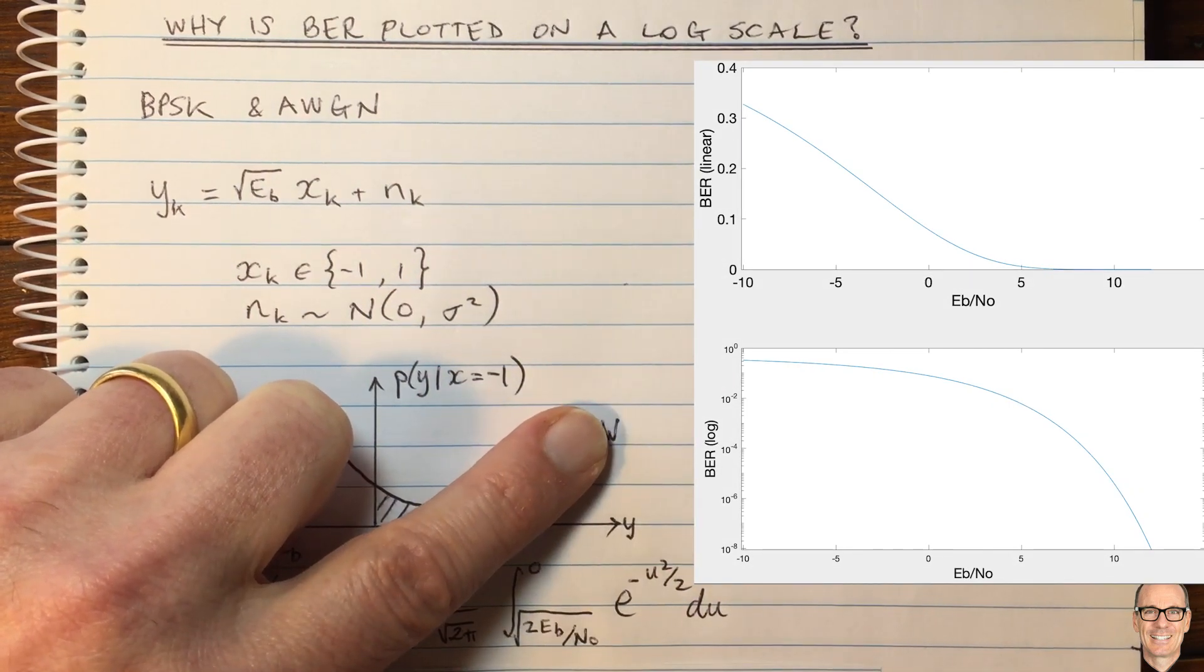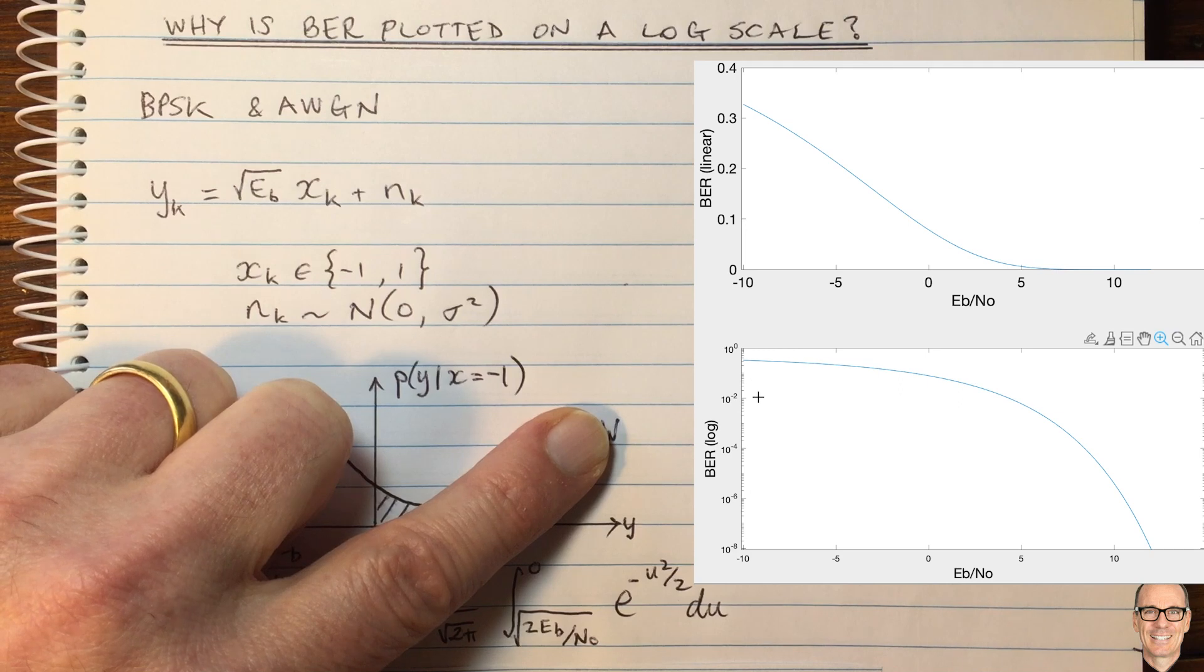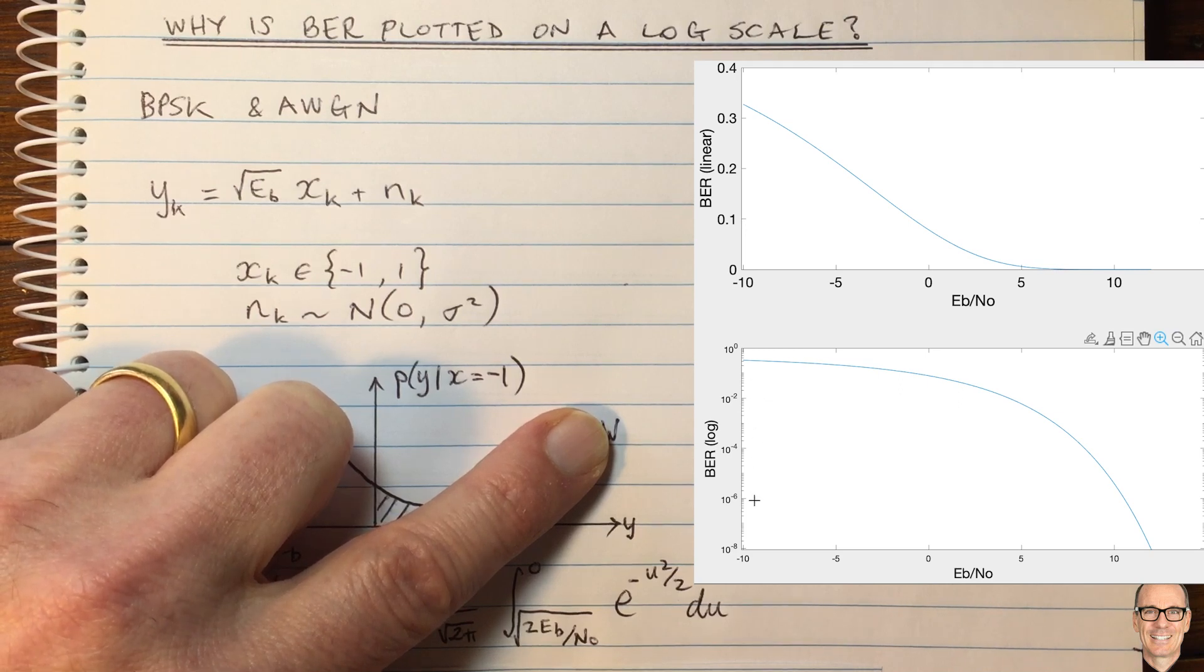And clearly now you can see that it's showing us all of these different possibilities of all these different orders, one in 10, one in 100, one in 1,000, one in a million, and so on.